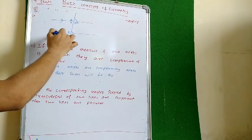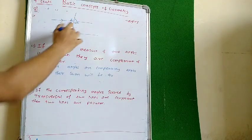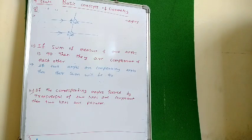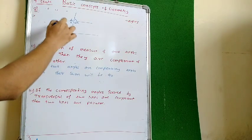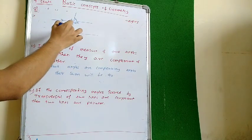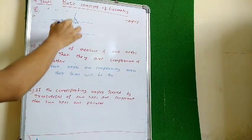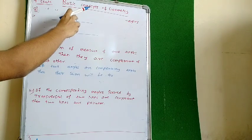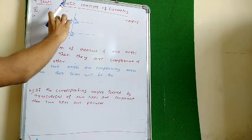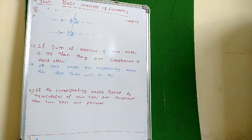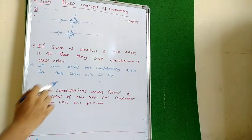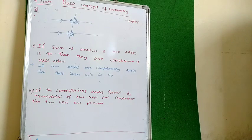And if the lines are parallel, then these pairs will be equal. If the lines are parallel, then they already form pairs of corresponding angles. But they will be equal when the lines are parallel. If the corresponding angles formed by the transversal of two lines are congruent, then the lines are parallel.